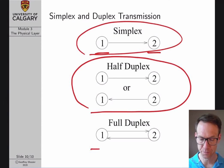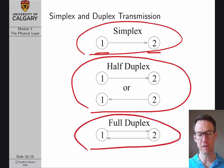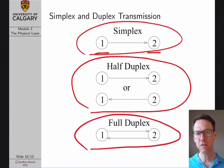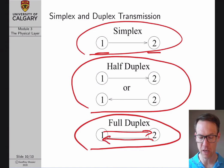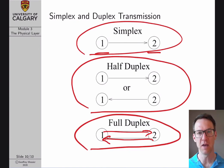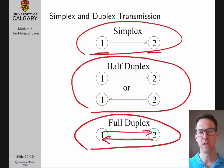Full duplex is a physical layer that can simultaneously support communications in both directions. This is typically only possible when you have two parallel but separate physical communications channels — one for each direction. For example, cellular telephones sometimes do this by using one band of frequencies for base station to mobile transmission and another band for mobile to base station transmission.